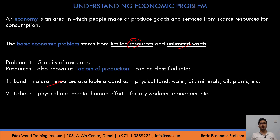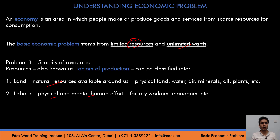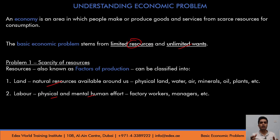The second category of factors of production is labor. Labor will include all your physical and mental human effort that is required to produce goods and services. Physical effort is obviously the one put in by the workers in the factory. Mental human effort refers to the planning done by the managers at the factory or at the office. Hence, all human effort put into the production of goods and services will fall under labor.